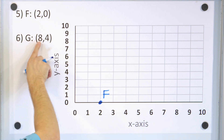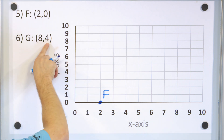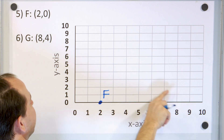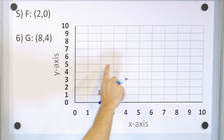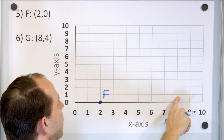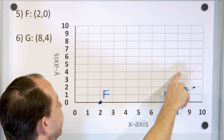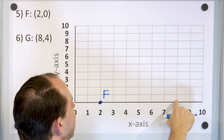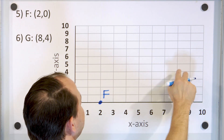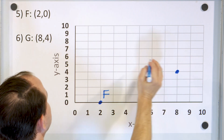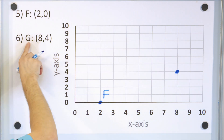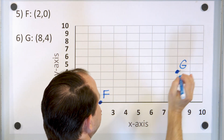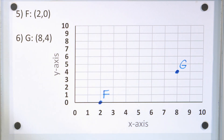Take a look at point G at 8 comma 4. X equals 8 means we go over to 8 first, then y equals 4, so we go up 1, 2, 3, 4. Notice that we're reading 4 off of the y-axis, so it's 8 comma 4. The point is right here, and the label is G.